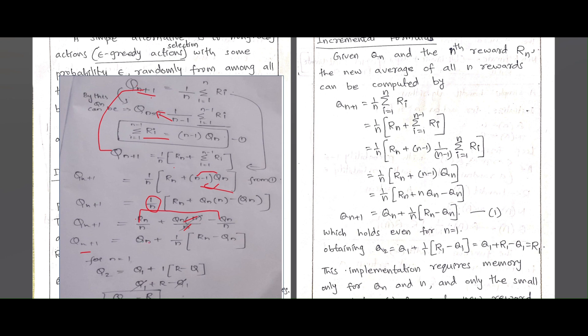To verify, substitute n=1: Q_{1+1} = Q_1 + (1/1)*(r_1 - Q_1). The Q_1 terms cancel, giving Q_2 = r_1. This confirms the formula is correct.